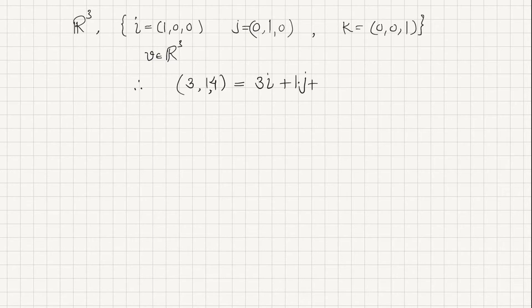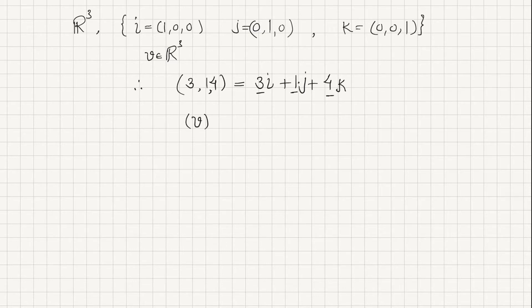If you put the values of i, j, and k you will get the same vector. So we can express it as the linear combination of the vectors in the basis. You see that these elements work as the coordinates for vector V relative to the basis B, which is the standard unit vectors. Observe that the coordinates of any vector relative to the standard basis is the vector itself.